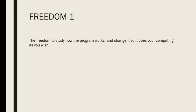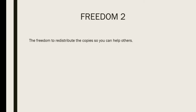Freedom 2 is the freedom to distribute copies so you can help others. When you use it, you can study the source code and make changes. Freedom 3 is the freedom to improve the program and release your improvements to the public.